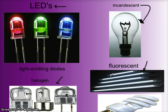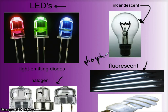Fluorescent lights absorb electromagnetic radiation of one wavelength and give it off at another wavelength. The insides of these bulbs are coated with a powder called phosphor. Phosphor absorbs ultraviolet light and gives off visible light. So there's quite a bit of energy transfer happening, but despite that, fluorescent light is cool and very efficient.